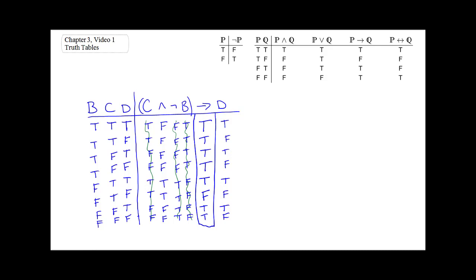Now we can determine the value of this whole formula based on the value of its components. For example, in the fifth row, when B is false and C and D are both true, the whole statement is true. More interestingly, if we wanted to know what would possibly make this formula false, it is false in exactly one case: when B is false, C is true, and D is false.